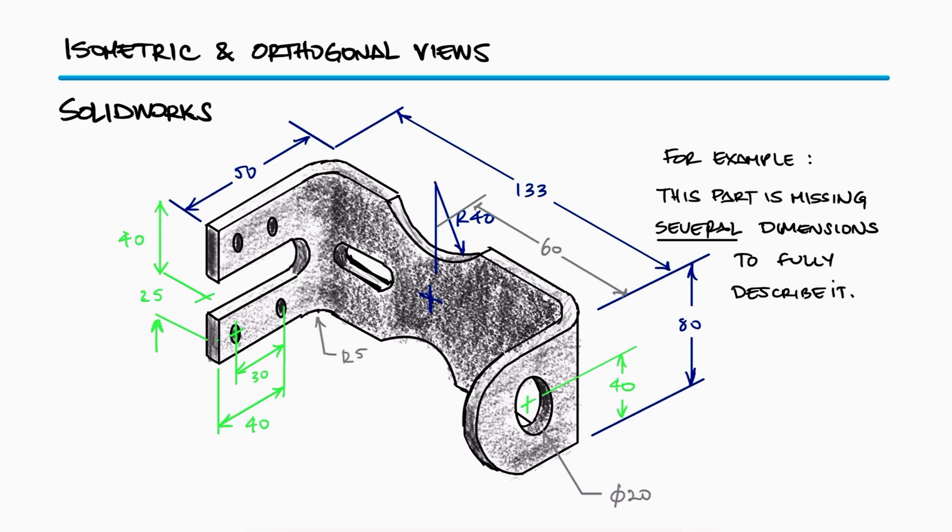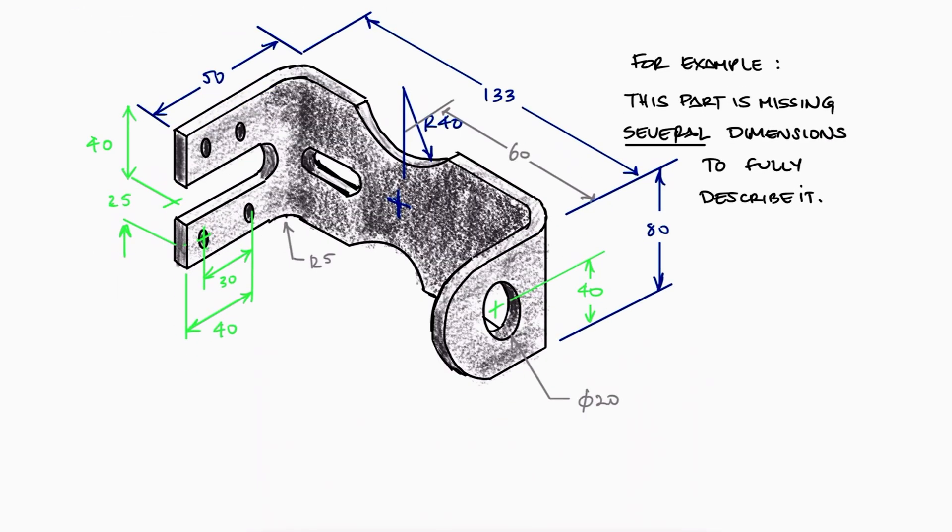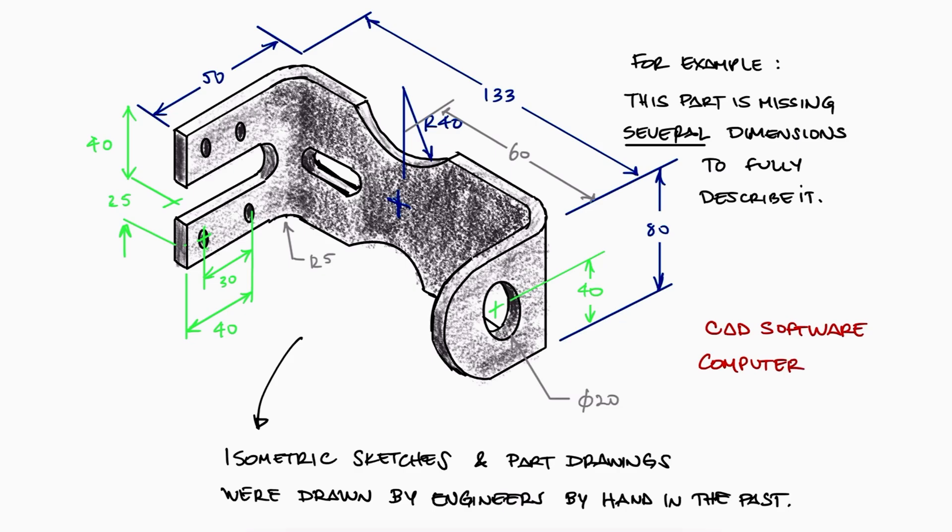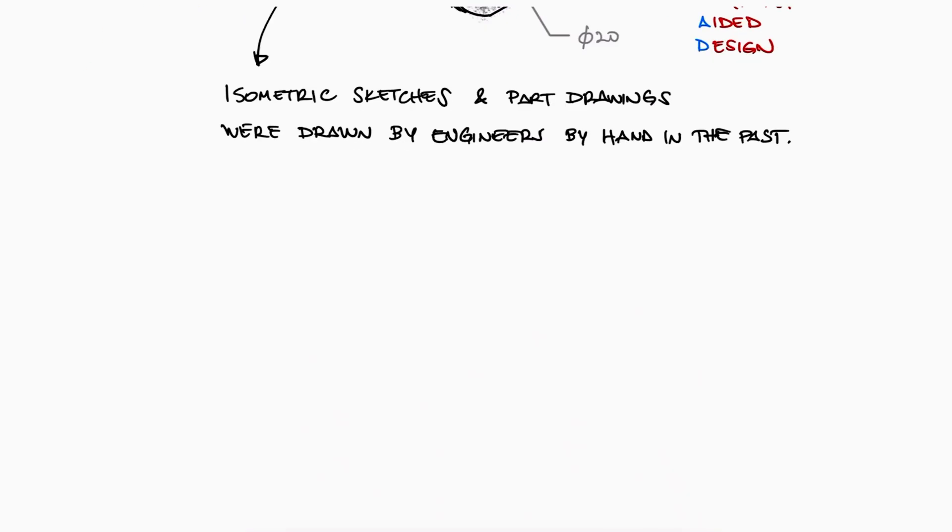Before software packages like SolidWorks were readily available, part drawings were actually sketched by engineers, and graphic design courses focused on teaching proper techniques for accurate orthogonal and isometric views. Most of those concepts are less valuable these days, except for the ones that are still essential to understand CAD software, which we will cover here today.